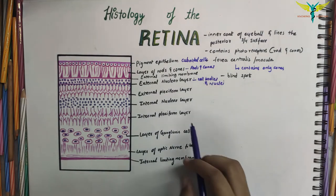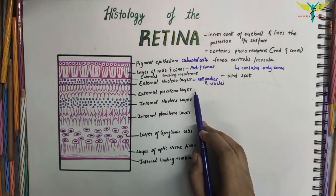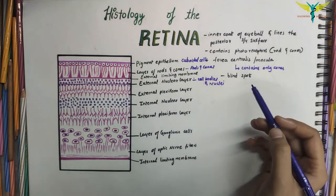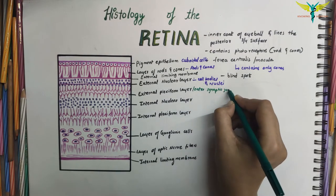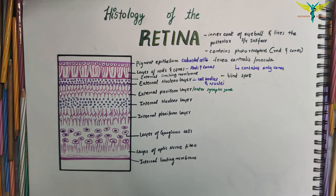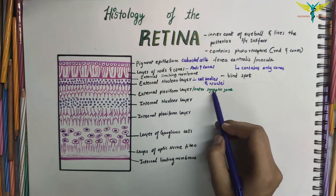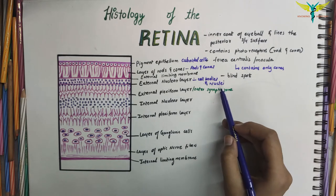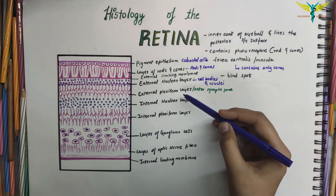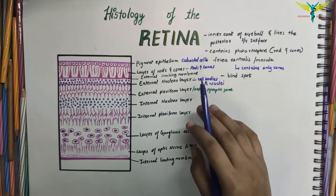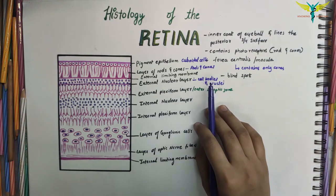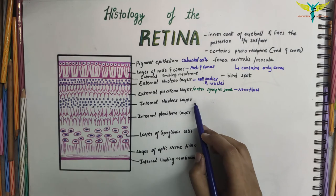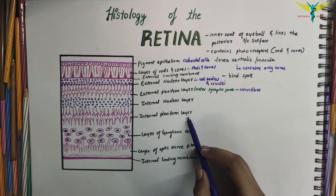The external plexiform layer is also called the outer synaptic zone. It consists of nerve fibers that form a plexus. The axons of rods and cones synapse here with the dendrites of bipolar neurons and horizontal cells. This layer only stains lightly.